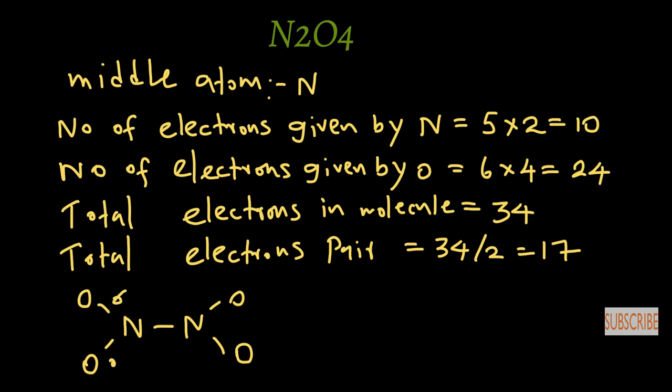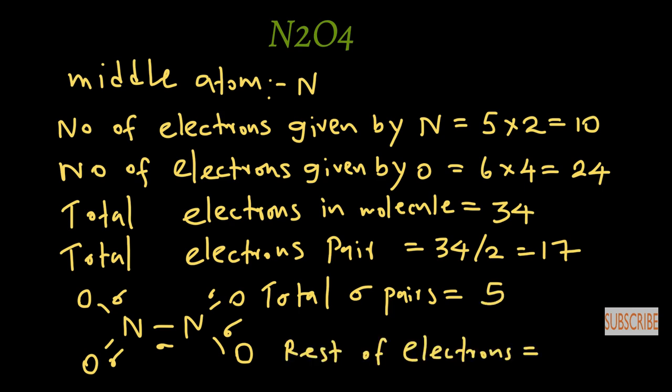In this sketch figure you can see four nitrogen–oxygen sigma bonds and one sigma bond between nitrogen and nitrogen, giving a total of 5 sigma bonds. That means the total sigma pairs is 5, and the remaining electrons is 12.